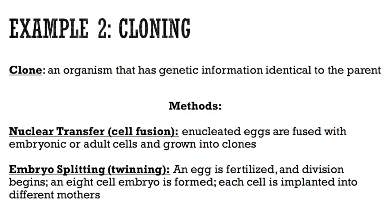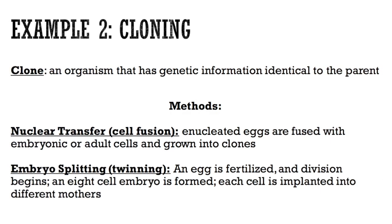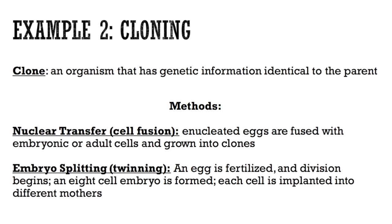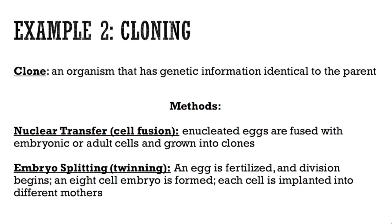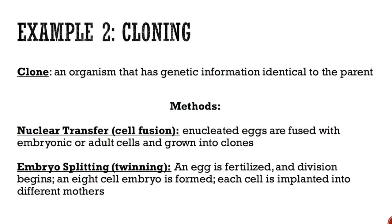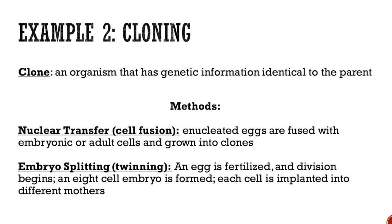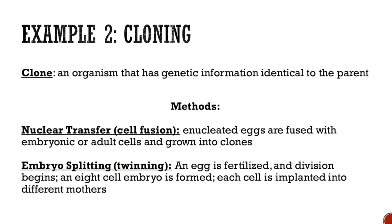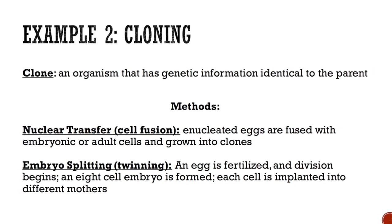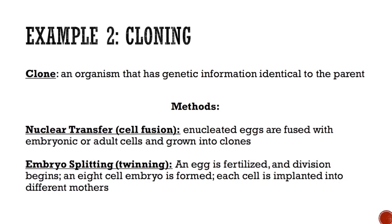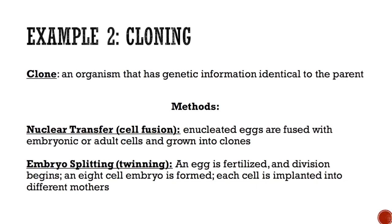Example 2. Cloning. A clone is an organism that has genetic information identical to the parent. There are two methods of cloning. The first is nuclear transfer, also known as cell fusion, in which enucleated eggs are fused with embryonic or adult cells and grown into clones.